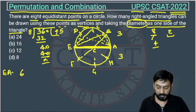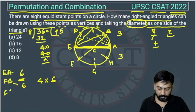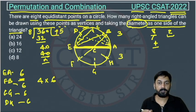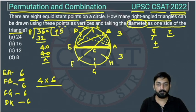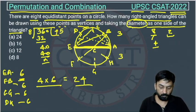With four diameters and six right angle triangles per diameter, we get four times six. You can verify: diameter FB gives six, CG gives six, and DH gives six right angle triangles. Adding them all: 6 + 6 + 6 + 6 = 24. Or directly, four into six equals 24. So the answer to this question is option A, which is 24.